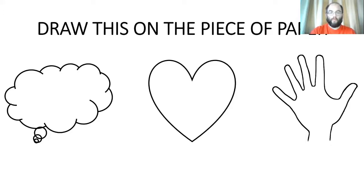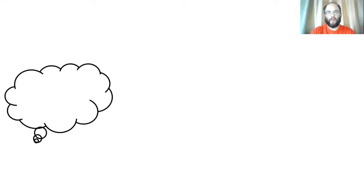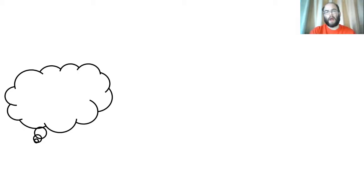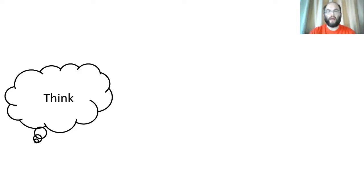Now we are going to talk about what these represent. We're going to start with the think bubble. The think bubble is the way that artists represent thought. What I want you to do right now is take one of your fingers and put it on your head like you're thinking. Then you're going to write 'think' inside of that thought bubble as a way to remind us about our thoughts.